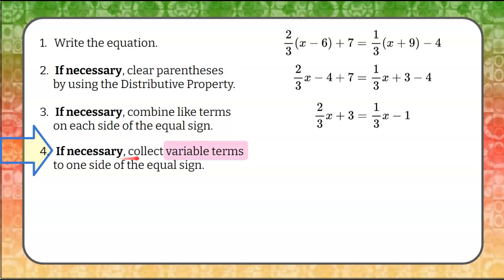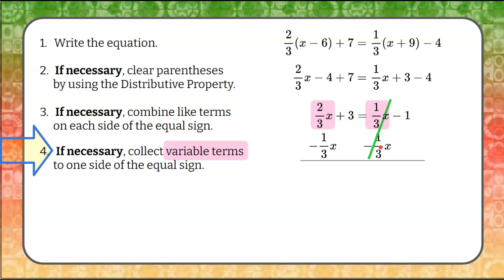Step four: if necessary, collect variable terms to one side of the equal sign. We identify variable terms on each side. Two-thirds is larger, so we collect to the left to avoid a negative coefficient. We subtract one-third x from both sides, creating a zero pair on the right. Two-thirds x minus one-third x is one-third x. The variable term on the right becomes zero, leaving negative one on the right.